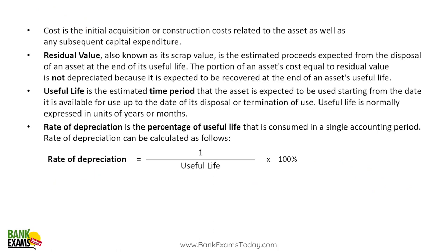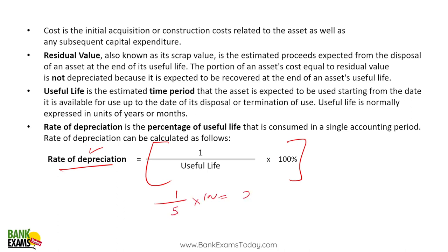How to calculate the depreciation rate? One divided by the useful life multiplied by 100, if there is no residual value. So if the useful life is five years, one divided by five multiplied by 100 equals 20%. So 20% is the rate of depreciation.